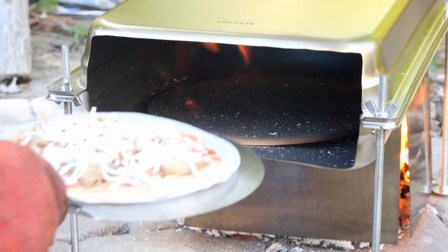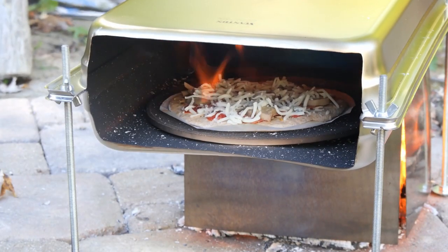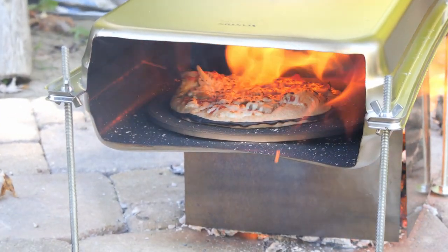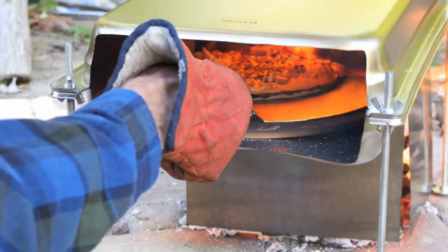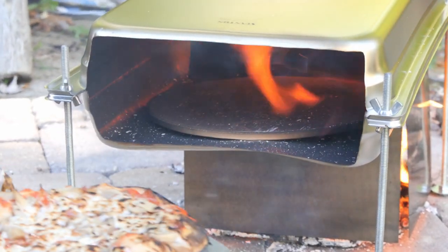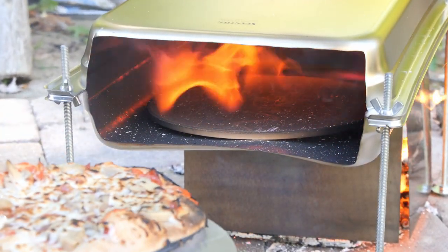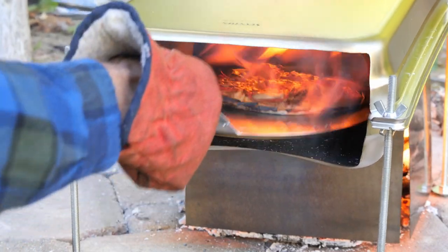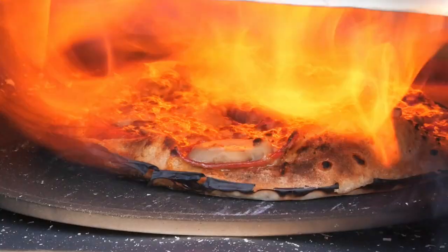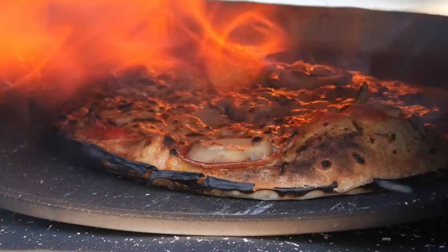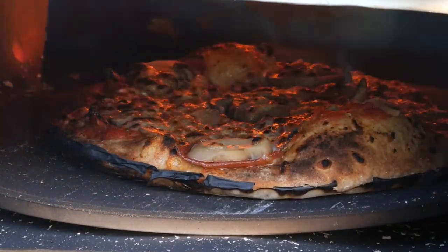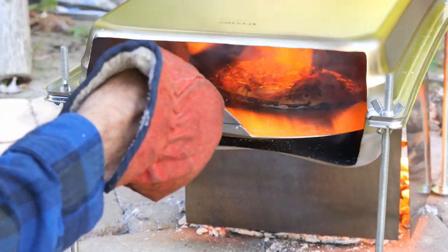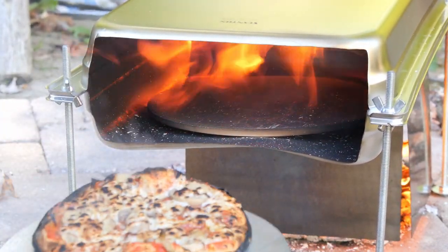Okay, the pizza stone's up to about 650 to 700 degrees, so in we go. There we are, about 60 seconds. Actually looks just about right. That's a nice looking pizza after 60 seconds. I turned it around and gave it a little more on the other side. There we are, wood-fired pizza.